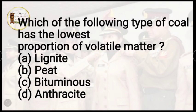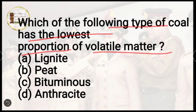Question number 28: which of the following types of coal has the lowest portion of volatile matter? Options are lignite, peat, bituminous, or anthracite. The correct answer is option D, anthracite.